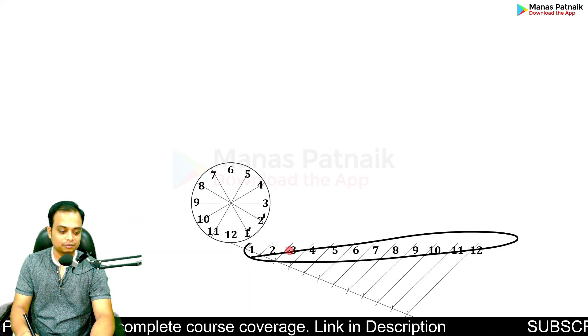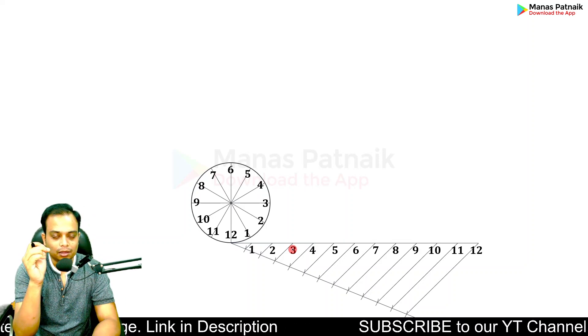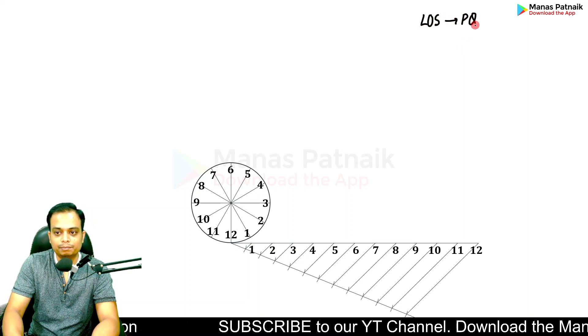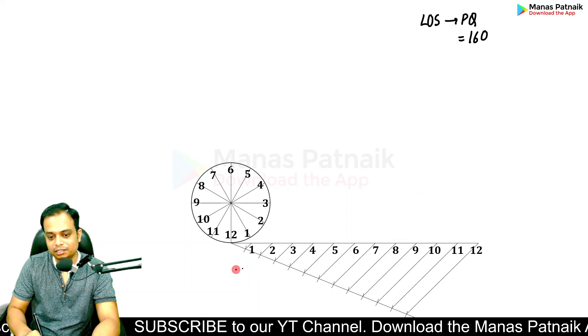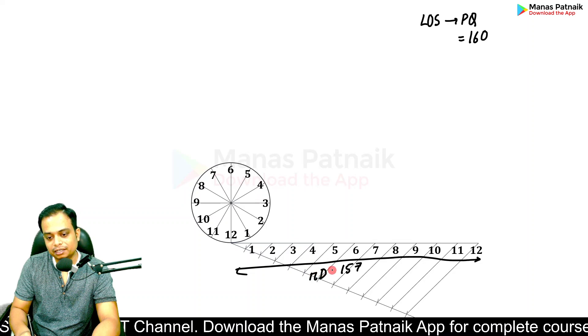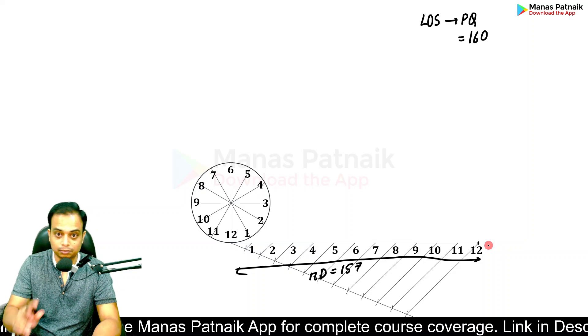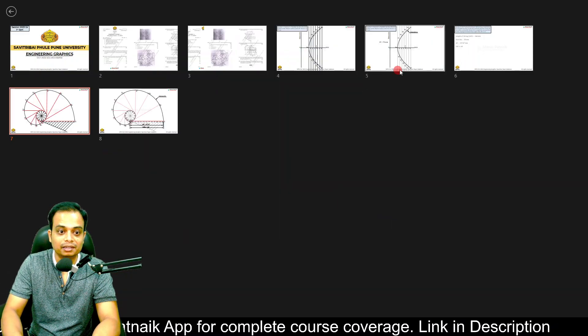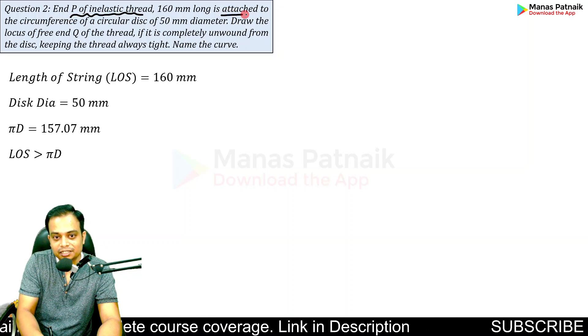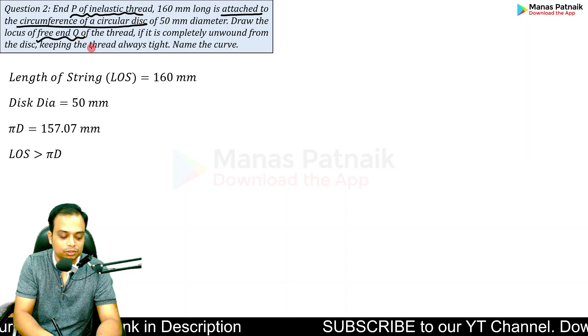Now, the length of string has been given. PQ is equal to 160 millimeters. How much is the line that we have just made? 157—that is πD, circle circumference. So point Q is going to be slightly beyond this. Not point P but point Q—please don't make this mistake. Let me go back: end P of the inelastic string is attached to the circumference, whereas end Q is free to move. There is a difference.